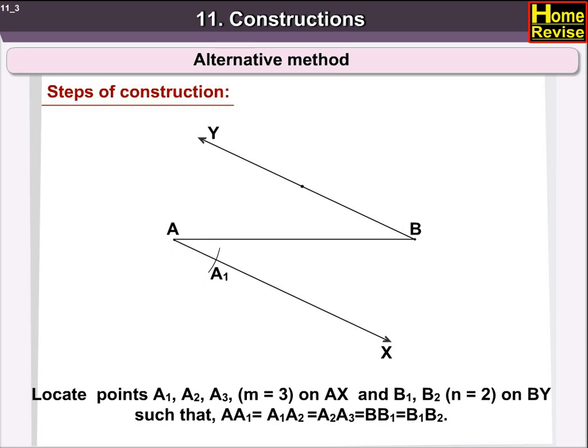Locate the points A1, A2, A3, since M is equal to 3, on AX and B1, B2, since N is equal to 2, on BY such that AA1 is equal to A1A2 is equal to A2A3 is equal to BB1 is equal to B1B2.